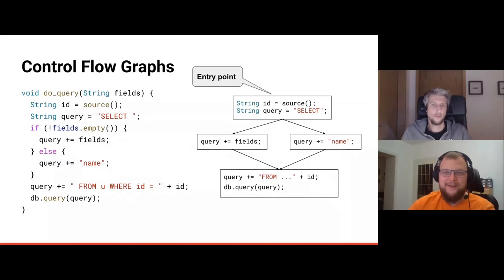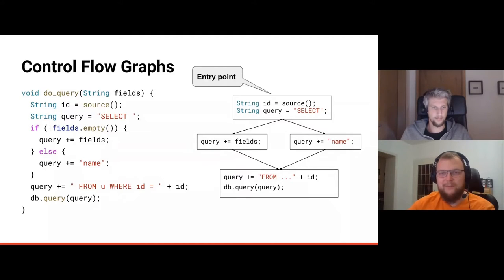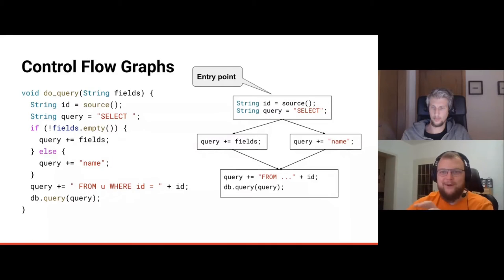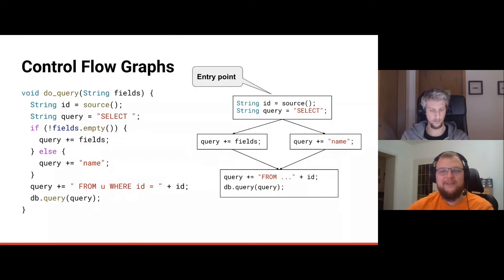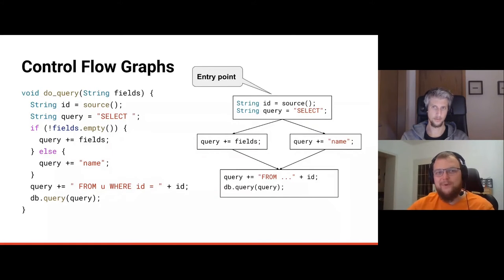The condition — like `!fields.isEmpty()` — can be modeled in various ways: on the edges labeled true/false, in its own node, or as a last expression of the previous node. In vulnerability analysis we are mostly path-insensitive — we want to explore all paths without needing to reason about the condition values themselves.